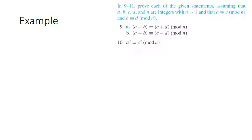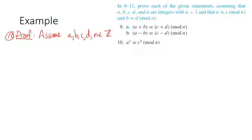Proof. We're assuming a, b, c, d, and n are integers with n greater than 1. The only assumption I actually need this time is that a is congruent to c mod n, because b and d are not mentioned. Since a is congruent to c mod n, that means there's some integer k such that a equals c plus n·k.